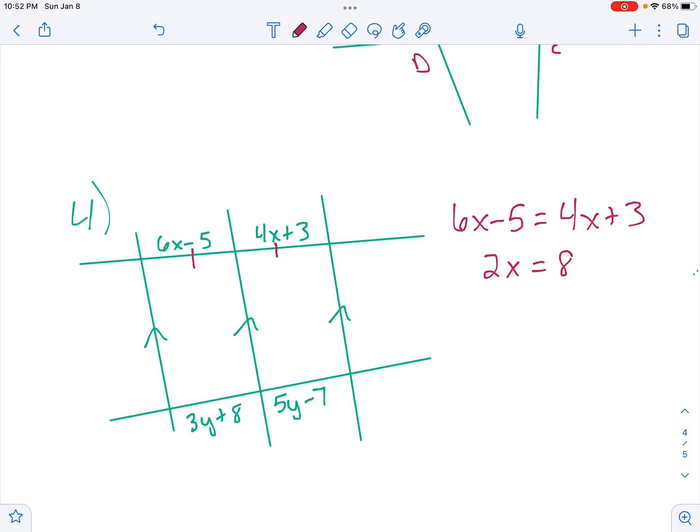Solve it down. Get our X's on one side, numbers on the other. So X equals 4. Well, if it cuts those two in half, then it has to cut the other one in half, which means these two guys are equal. So we can also say 3Y plus 8 equals 5Y minus 7. We can solve that down to get 2Y equals 15. So Y equals 7.5.